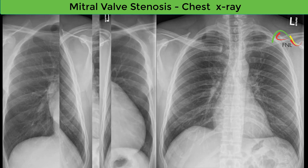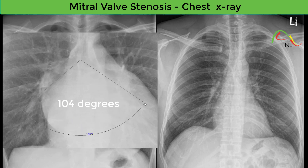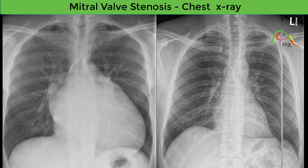Splaying of the carina. Widening of the carina angle to over 90 degrees is an indirect sign of left atrial enlargement. The subcarina angle on this radiograph is roughly 104 degrees. This occurs because the left atrium is located directly inferior to the carina, and the enlarged left atrium pushes the main bronchi away from each other, increasing the subcarina angle. Note that splaying of the carina can also be caused by other pathologies.